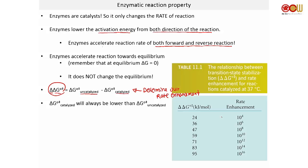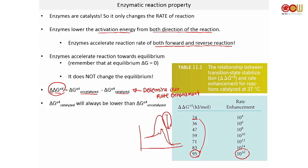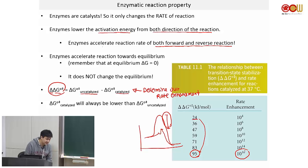If you look at the relationship between transition state stabilization and rate enhancement, dropping the energy by about 24 kilojoules per mole enhances the rate by 10 to the fourth power. The larger the energy gap between the uncatalyzed and catalyzed transition states, the larger the rate enhancement. It depends on how well your enzyme stabilizes the transition state — different enzymes have different properties; some can stabilize it better.